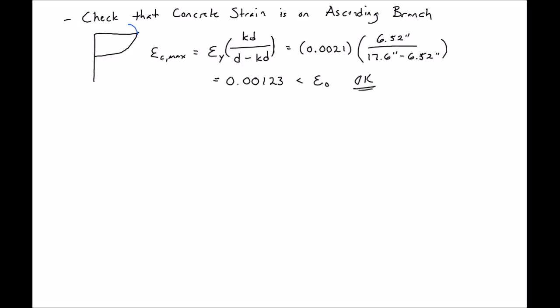So next we can compute our corresponding curvature. So we know our curvature, we'll call our curvature phi y. And we know it's equal to our epsilon Cmax divided by KD.